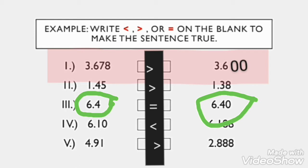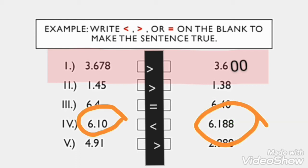For number 4, it is 6.10 is less than 6.188. So, 6.10 has 3 digits while 6.188 has 4 digits. To make it equal, we should add another zero to the first number which is 6.10. And in comparing, it is less than 6.188. So, that is why our answer is 6.100 is less than 6.188.